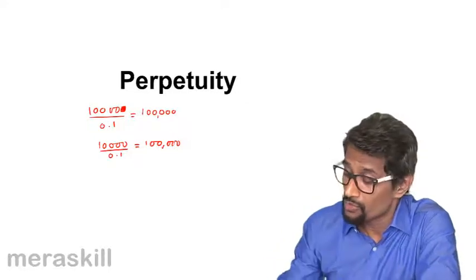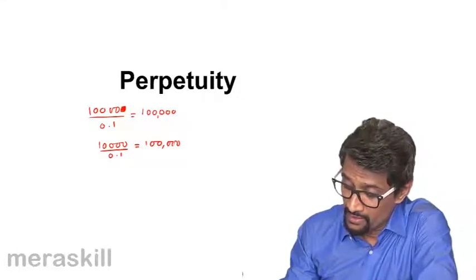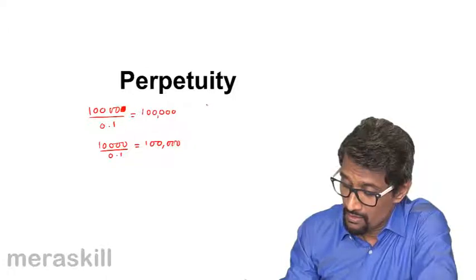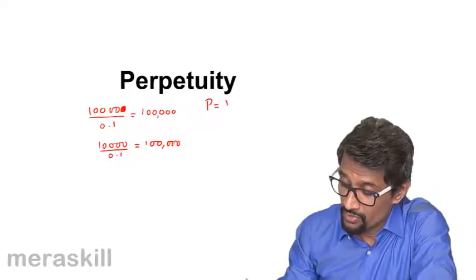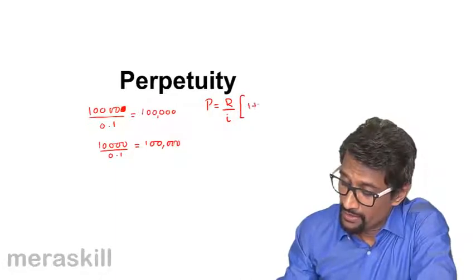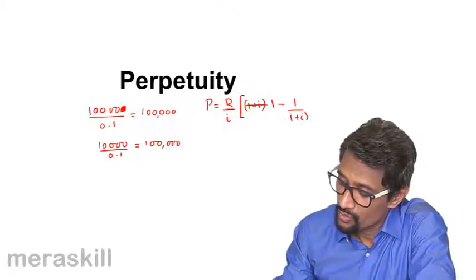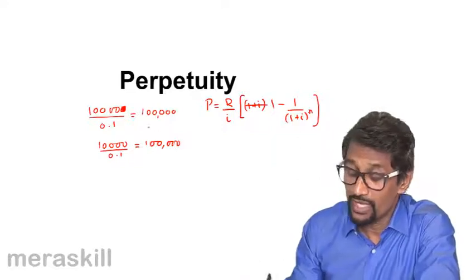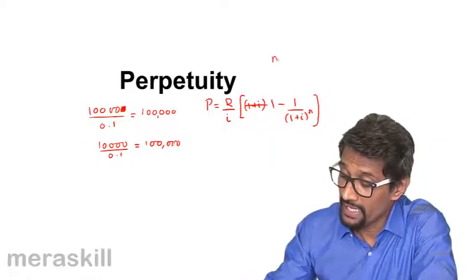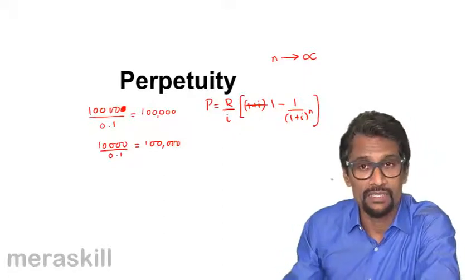is going to be R upon I into [1 plus I raise to 1 minus 1 plus I raise to n]. Now if you see, we are looking at perpetual, that means n is approaching infinity. In such a